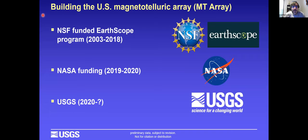The US Magnetotelluric Array is a composite of different funding sources, from its conception in 2003 to its completion. The largest component was the EarthScope program — an NSF-funded program that ran for 15 years focused on understanding the structure and dynamics of the North American continent. Along the way, it became recognized that magnetotellurics has an important role in understanding space weather hazards, particularly geomagnetically induced currents (GIC) that can have deleterious effects on critical infrastructure like power lines. This recognition led to follow-on funding from NASA and, starting last year, the USGS, with completion of the contiguous US projected around 2023 or 2024.